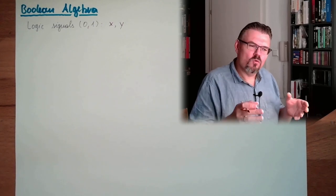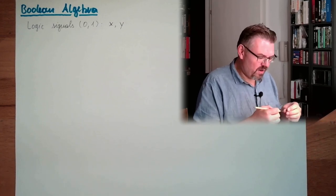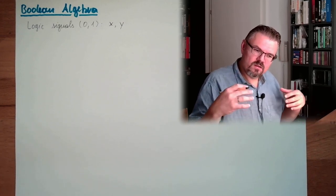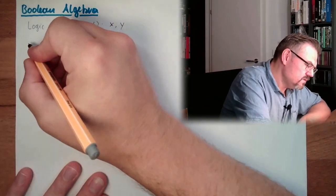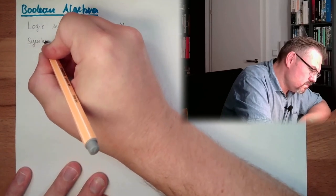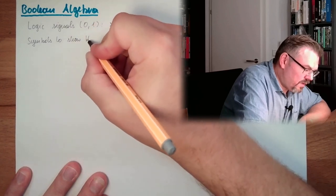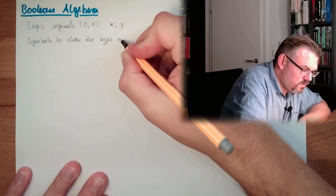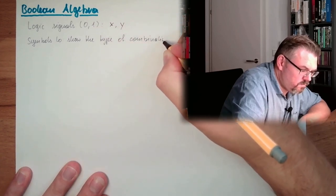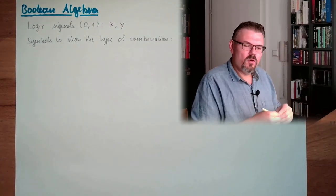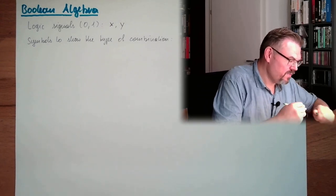And we want to note the combination of two of them. And there are symbols for displaying what kind of combination those two signals have. There are symbols to show the type of combination. And the usual combinations are AND or OR. So we have AND combination.